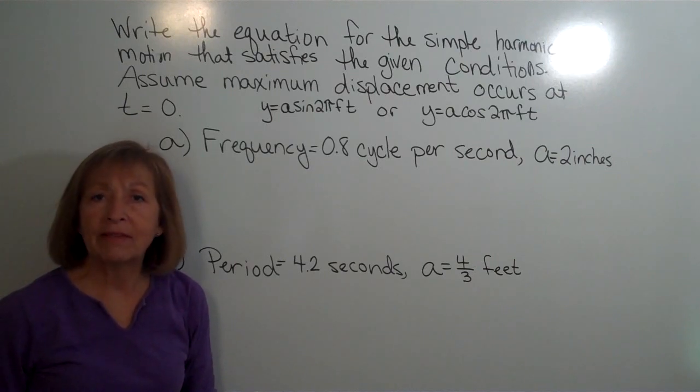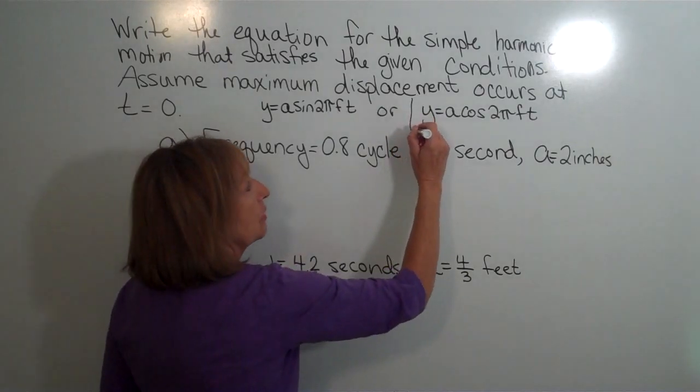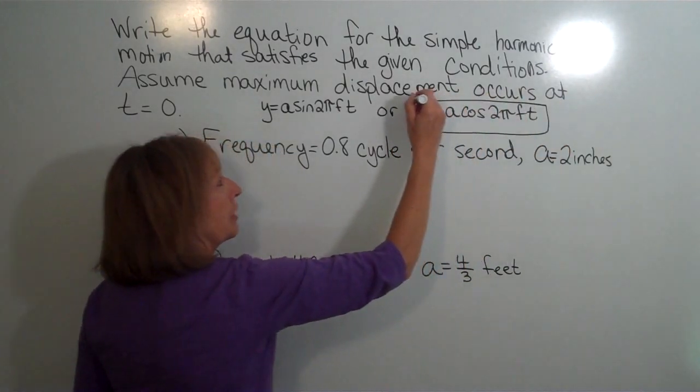So at time t equals zero, having the maximum displacement, that's telling me that the model we are going to use is the one that involves the cosine function.